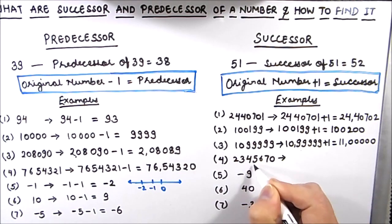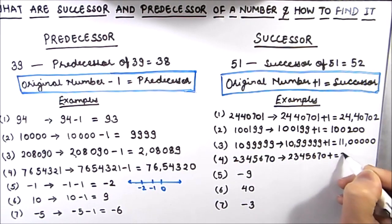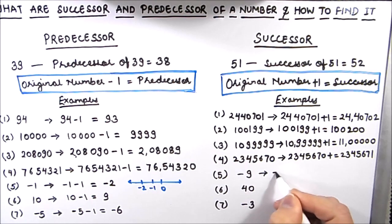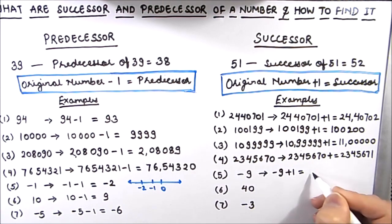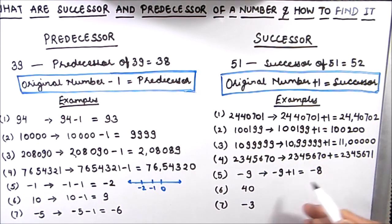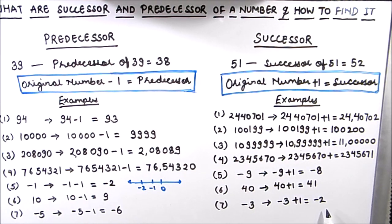The successor of 23,45,670 is 23,45,671. Next, for the negative integer -9, we add 1 and get -8 — because on the number line, -8 is one more than -9. The successor of 40 is 41. Finally, the successor of -3 is -2, because the value of -2 is greater than -3 by 1.